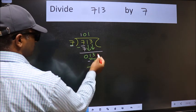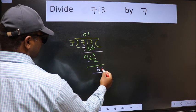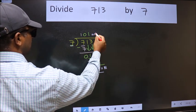No more numbers to bring down, so we stop here. This is our remainder and this is our quotient.